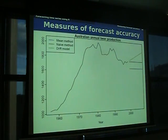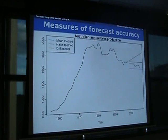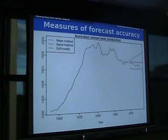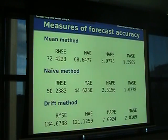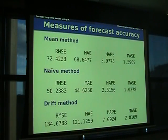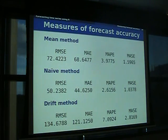Here are our three benchmark methods applied — that black line is the real data. The drift didn't work too well; the naive and the mean didn't do too badly in this case. I calculate the difference between the black line as my Y values and the colored lines as the different forecasts, plugging them into those formulas, and I get these results: RMSE, MAE, MAPE, and MASE. For these data, the naive method does better on all measures. Sometimes one method does better on one measure and another on another, but often if it does better on one it'll do better on all.